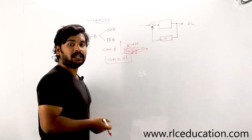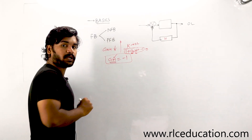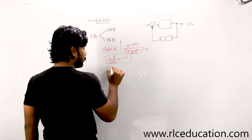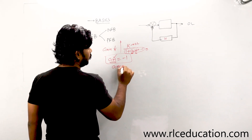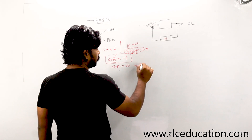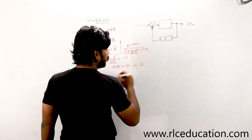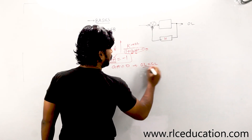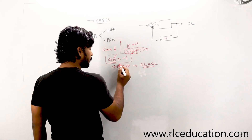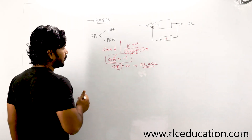By carefully choosing the value of the feedback parameter in the transfer function, you can decide the stability of the system. If you make the GH value equal to zero, then the gain of the closed loop system is the same as the open loop system — there is no difference. So we vary the gain of the system by varying the feedback. By the nature of feedback only, you can achieve all these characteristics.